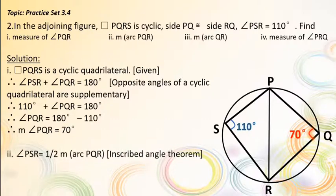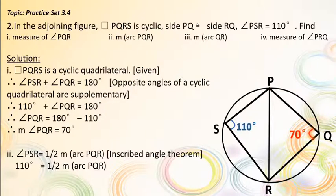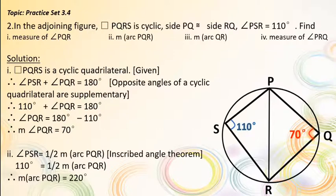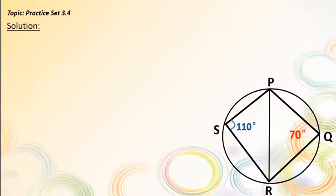Second, using the inscribed angle theorem, angle PSR = half of measure of arc PQR. Therefore, 110° = half of measure of arc PQR. Therefore, measure of arc PQR = 220°.